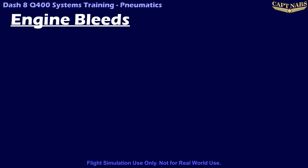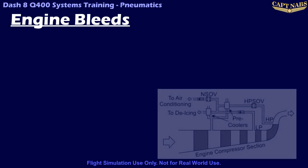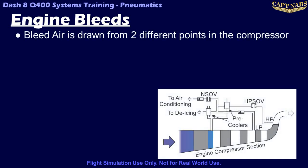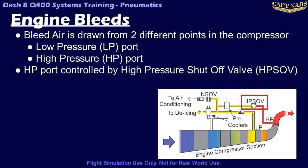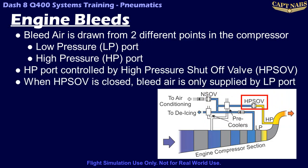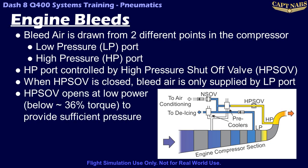The primary source of bleed air on the Q400 is the engines. Pressurized air is drawn from two different ports located at different stages of the engine compressors. The low pressure port is at an early stage in the compressor and siphons off a small portion of compressed air to provide pressurized air to the various aircraft systems. A second high pressure or HP port is located at a later part in the compressor. The air at this stage has been compressed further and is at a higher pressure and temperature. Output from this port is controlled by the high pressure shutoff valve or HP SOV. When the engine is operating at low power, below about 36%, the low pressure port does not provide enough air pressure for the bleed system, so the high pressure shutoff valve is commanded open by the ECU so higher pressure bleed air can enter from the high pressure port.